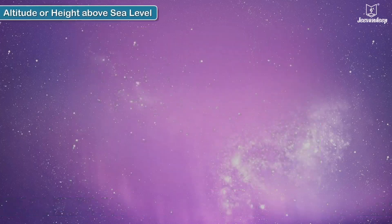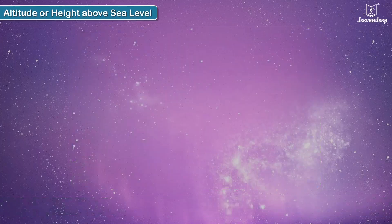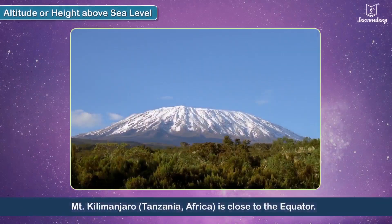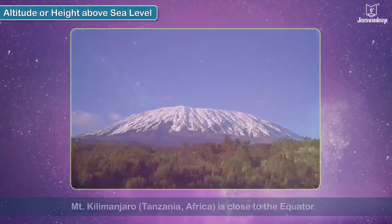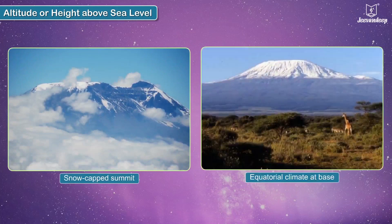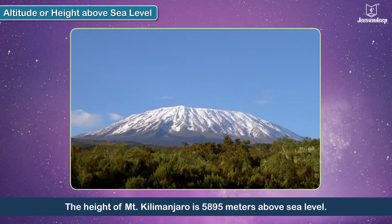Altitude, or height above sea level: the higher a place is above sea level, the cooler its climate. This happens due to the slanting sun rays it receives and a relatively thinner envelope of air. Mount Kilimanjaro in Tanzania, Africa, is close to the equator yet has a snow-capped summit, while its base has an equatorial climate. The height of Mount Kilimanjaro is 5,895 meters above sea level.